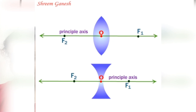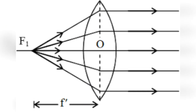A ray of light can enter a lens from either side, therefore a lens has two principle foci — one on either side of the lens — known as the first focal point and second focal point. For a convex lens, the first focal point is a point F1 on the principle axis such that rays of light coming from it, after refraction through the lens, become parallel to the principle axis.